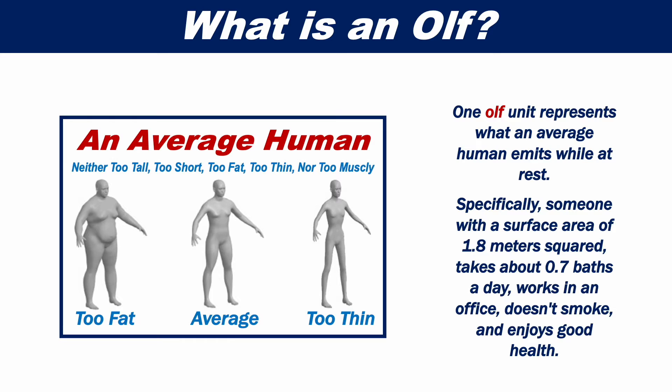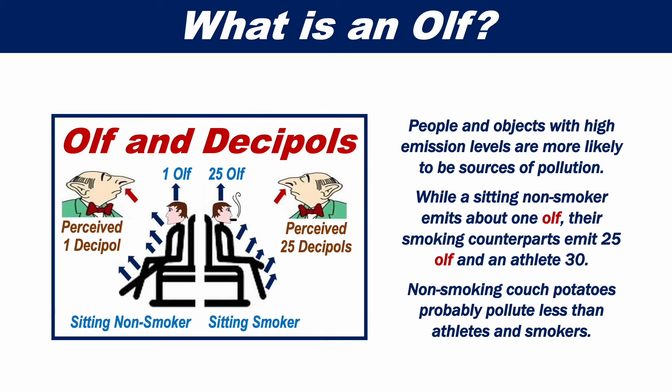One olf unit represents what an average human emits while at rest. Specifically, someone with a surface area of 1.8 metres squared, who takes about 0.7 baths a day, works in an office, doesn't smoke, and enjoys good health. People and objects with high emission levels are more likely to be sources of pollution.